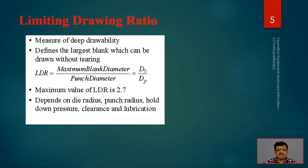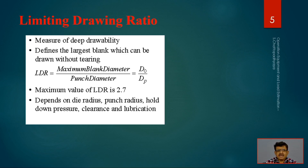The measure of deep drawability — 'deep' because there is height involved — defines the largest blank which can be drawn without tearing, because if tearing occurs the product is absolutely unacceptable. We have to ensure the entire process results in drawing without tearing. That ratio is the maximum blank diameter divided by the punch diameter: D₀ (maximum blank diameter) divided by Dₚ (punch diameter), and this ratio is called the LDR ratio.